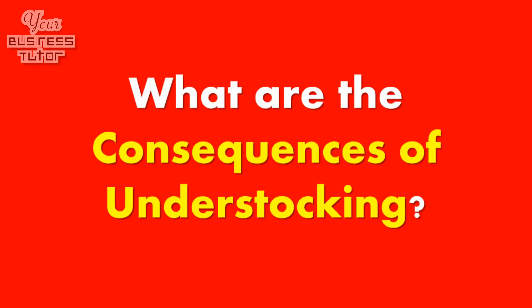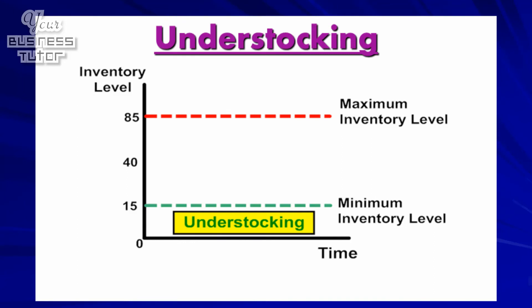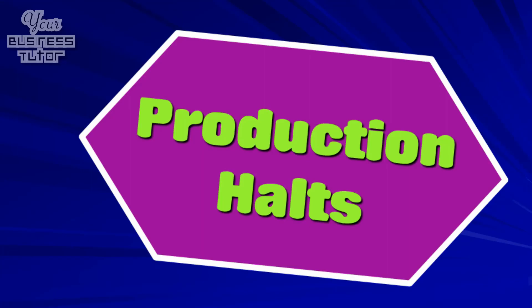Okay, let's now turn to look at the consequences of understocking. Understocking occurs when a business's inventory level is below the minimum point. For example, in the diagram shown, any inventory level below the minimum of 15 would be classified as understocking. This can be a problem for a business because if they are involved in manufacturing items, production may have to halt until new materials arrive, meaning contracts will not be completed on time. And equally, if a business is a retailer, understocking could result in empty shelves, which may persuade customers to shop elsewhere as they can't get what they want.